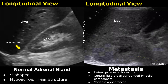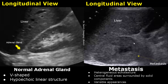Metastasis to the adrenal gland is common. They have a heterogeneous echo texture. In this image, we see central fluid areas surrounded by solid components. We do not see any well-defined margin. Metastasis also gives variable appearances.